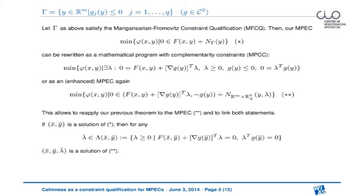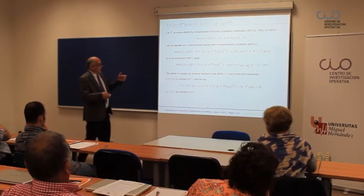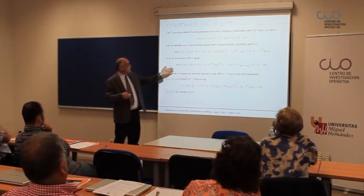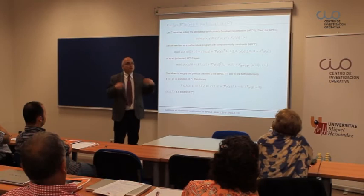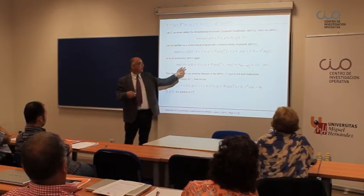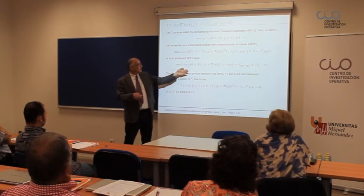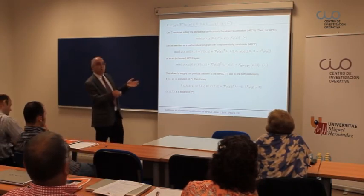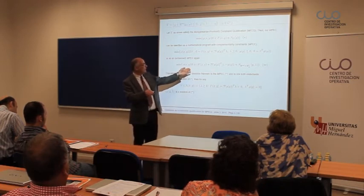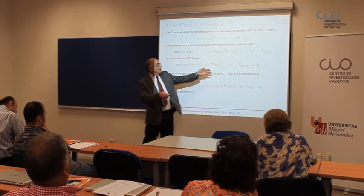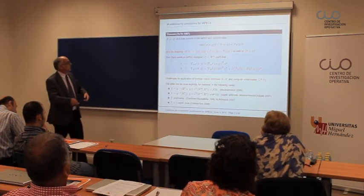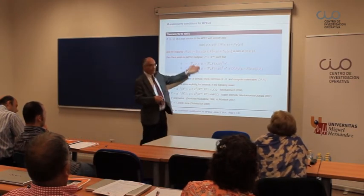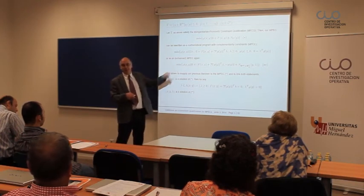If you rewrite all these relations in a more compact form, you can do it like this: we have a single-valued mapping with two components and a normal cone to some other simpler set — no longer gamma. Reading off the first component means this first element should belong to the normal cone to R^m, which is zero, so we recover this equation. The second component means G of y has to belong to the normal cone to R^q_+, which provides exactly the other relations. So what we have done here is we minimize again the same objective function and implicitly add lambda as a new variable, considering it as an additional variable.